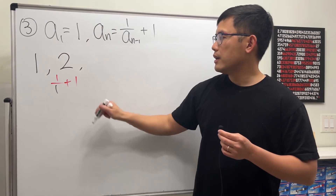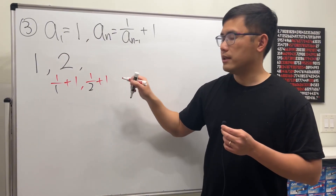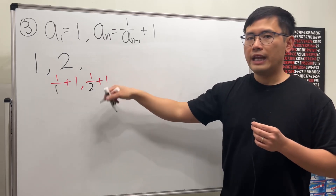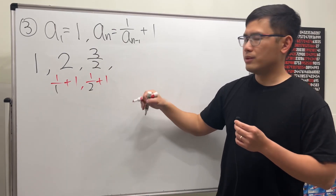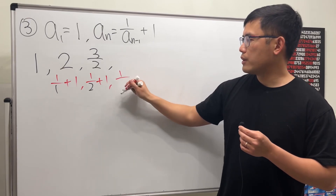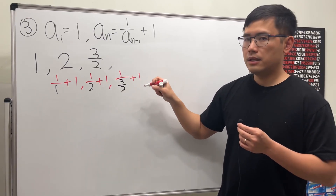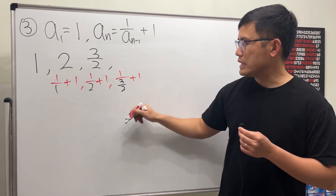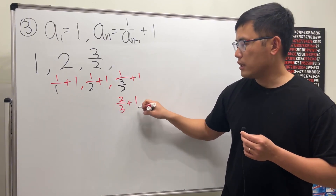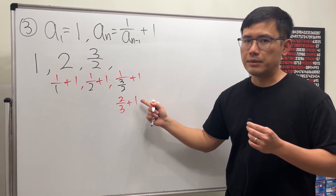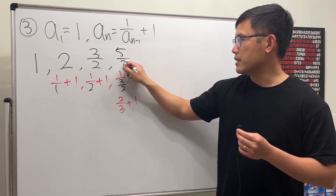Then we do 1 over the previous and then plus 1: 1 over 2, plus 1 — that's 1/2 plus 1, which is 3/2. Continuing: we get 1 over (3/2) plus 1. The reciprocal of 3/2 is 2/3, and then plus 1, which is the same as plus 3/3. So 2 plus 3 gives us 5, and the denominator is 3, giving 5/3.